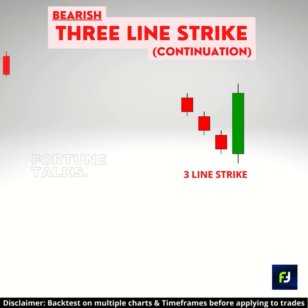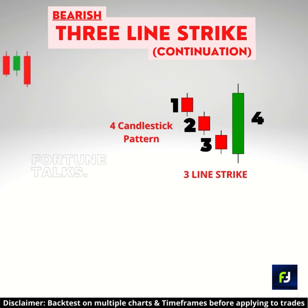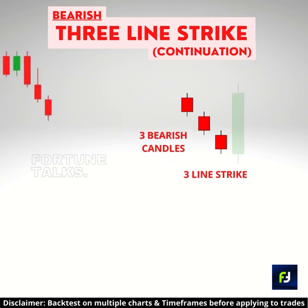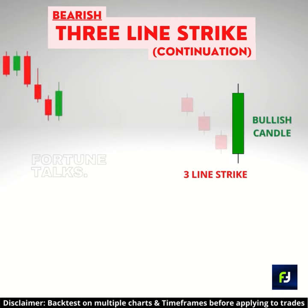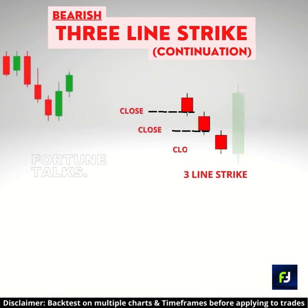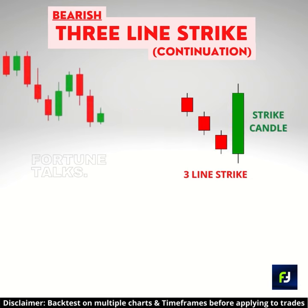A bearish three-line strike is a four-candle continuation pattern that forms during a downtrend. The pattern is made up of three bearish candles and one large bullish candle. The first three candles are three strong bearish candles that close increasingly lower, followed by a single bullish strike candle.